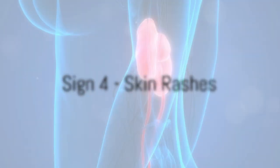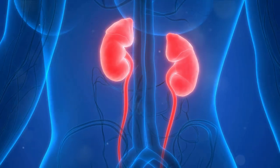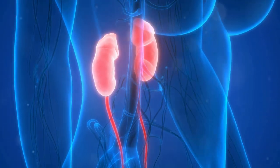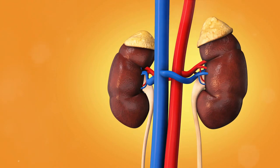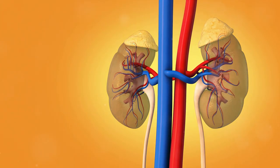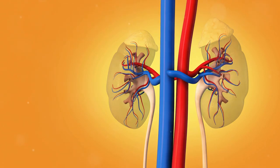On to the fourth sign, skin rashes and itching. Now you may wonder how can something as common as a rash be linked to kidney disease? Well, our kidneys play a crucial role in eliminating waste from our bodies. When they're not functioning as they should, these wastes can accumulate, leading to a host of issues including skin rashes and itching.